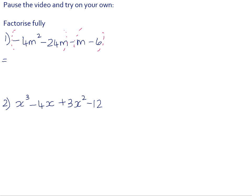If we take out a common factor to negative 4M squared and negative 24M, the common factor is negative 4M. That leaves you with M plus 6. Over here, we have negative M minus 6. If I take out a negative, that leaves me with M plus 6. And so we get M plus 6 and negative 4M minus 1 as the common factor.